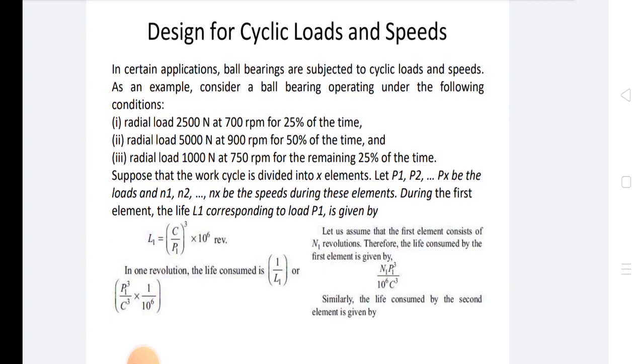First, radial load 2500N at 700 RPM for 25% of the time. Radial load 5000N at 900 RPM for 50% of the time. And radial load 1000N at 750 RPM for the remaining 25% of the time.